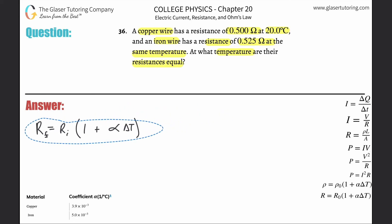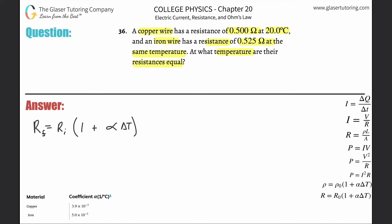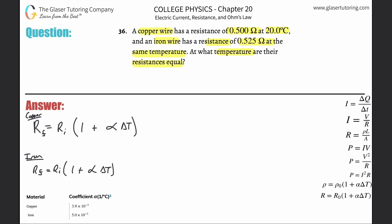Let's write it down for copper, then for iron. So: R_f = R_i × (1 + α × ΔT). I'm going to assume that the temperature given in the problem is the initial temperature. For the copper wire, plugging in values: R_f equals the initial resistance of 0.5 ohms, multiplied by (1 plus the temperature coefficient for copper — either memorized or from a table —